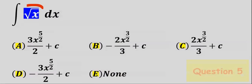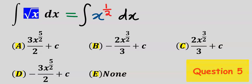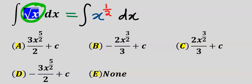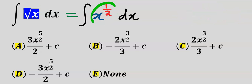Next let's integrate this function. Before we integrate we are going to rewrite this function. Remember the square root of x is the same as x to the power of 1 over 2 — just as the square root of 4 equals 4 to the power of 1 over 2, which is 2. Hence we are going to be integrating the rewritten form and not the original.